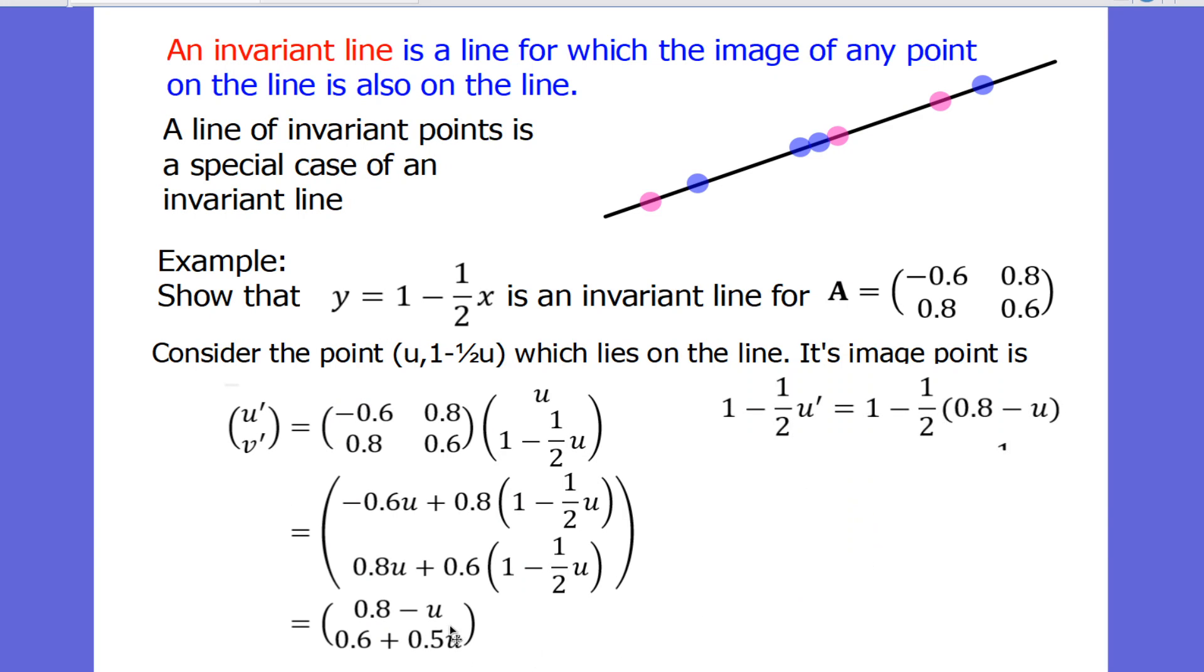We're wanting this point to be on the line. And therefore, we should find, we work out what the y coordinate is in terms of u dash. The y coordinate is 1 minus 1 half lots of u dash. u dash is that, so we put that in. So this is the y coordinate of that point, the image of that point. It works out to be 0.56 plus 0.5 u dash, which fits with this. And therefore, that all fits. And we've now shown that this is an invariant line because the new point has the correct relationship between u dash and v dash that fits this line.